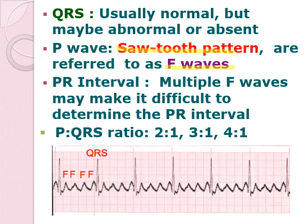These are your fibrillatory waves, or F-waves. Multiple F-waves may make it difficult to determine the PR interval. That is why you cannot usually count the PR interval if your patient has atrial flutter or atrial fibrillation. The P-to-QRS ratio is either 2-to-1, 3-to-1, or 4-to-1. However, the ratio will be regular — if it is 4-to-1, it will be 4-to-1 throughout the strip. This is one characteristic of your atrial flutter.